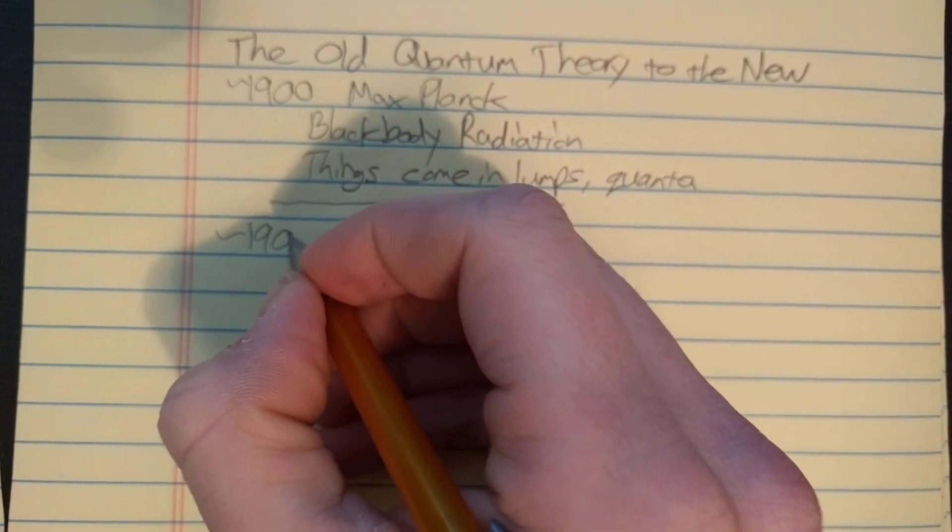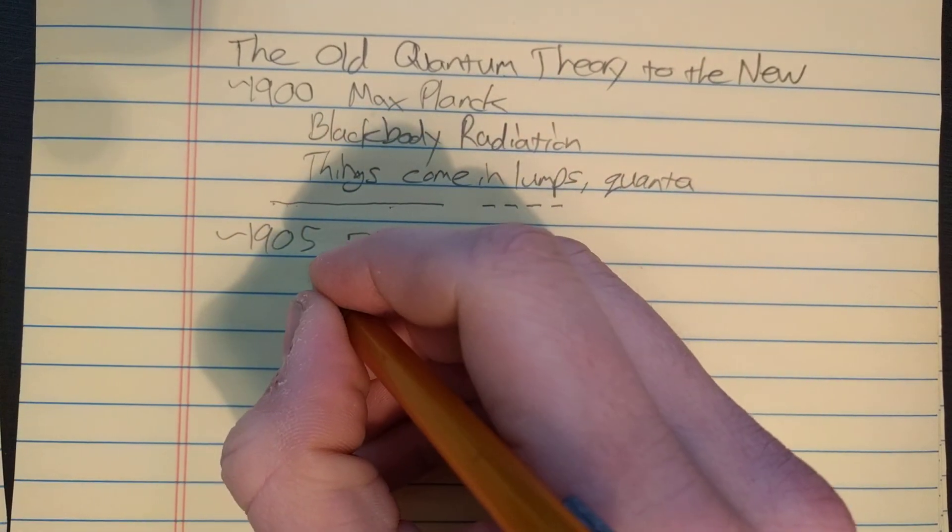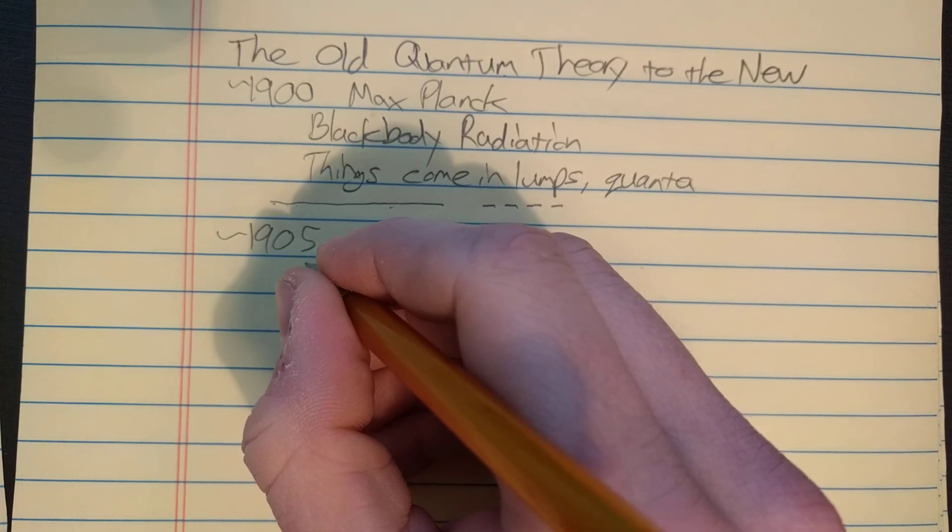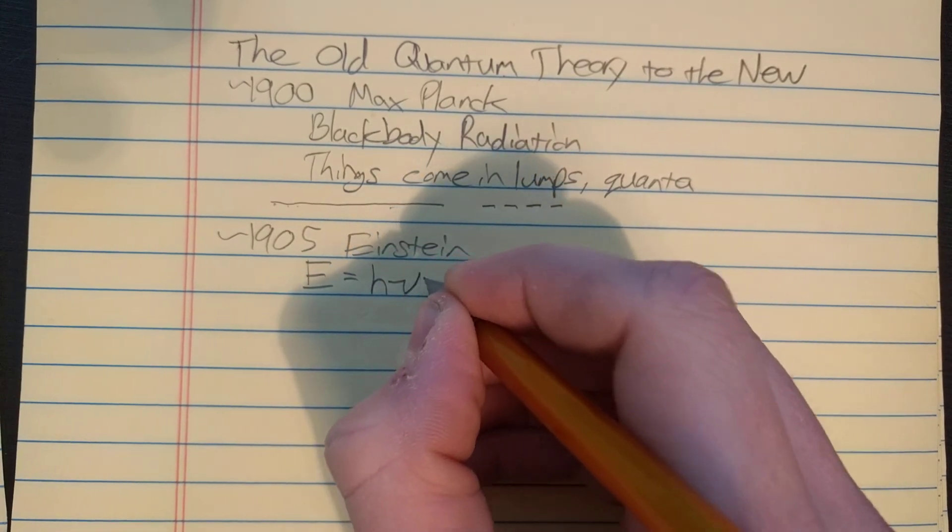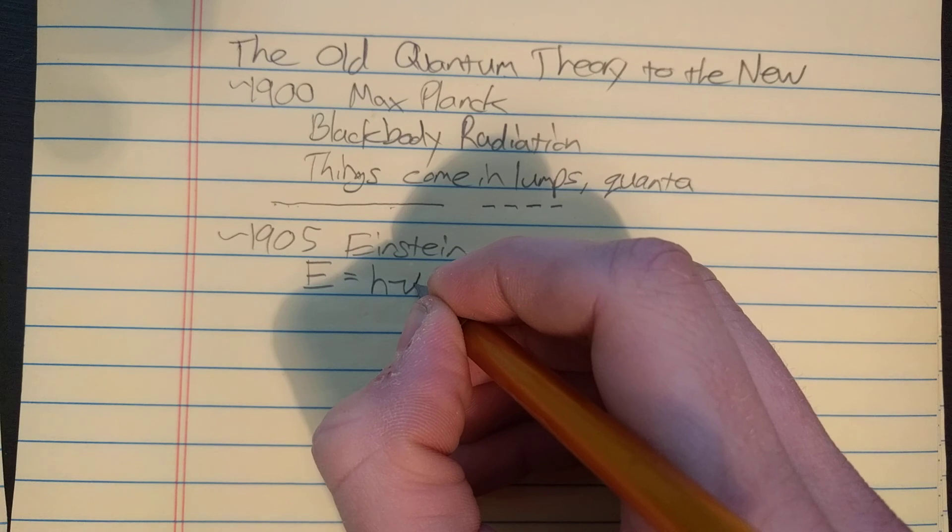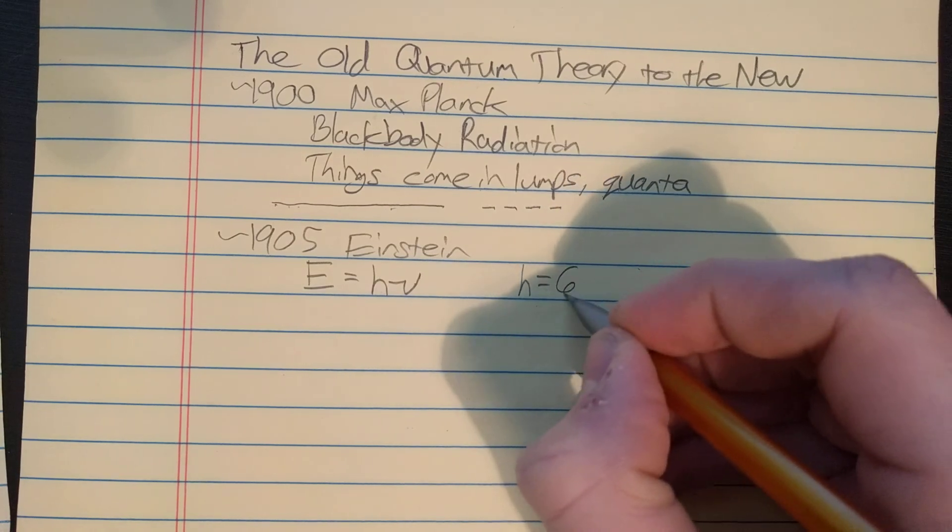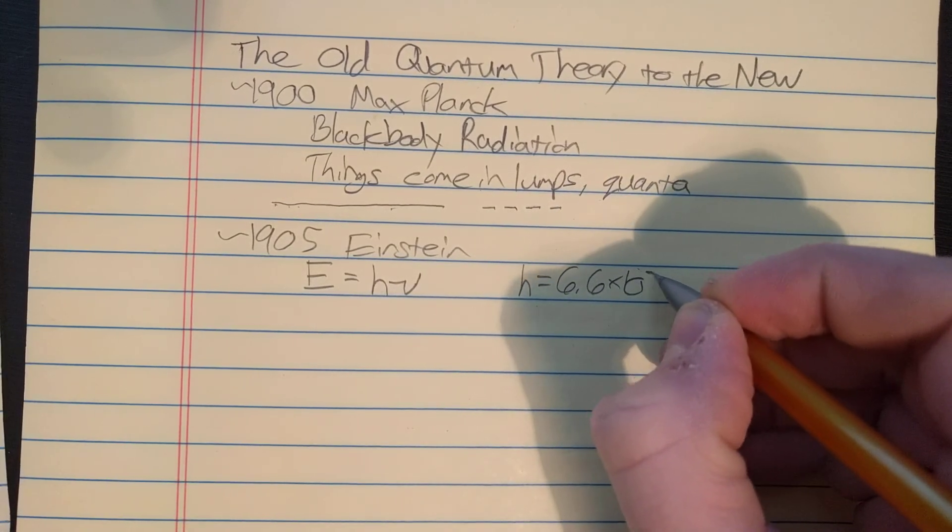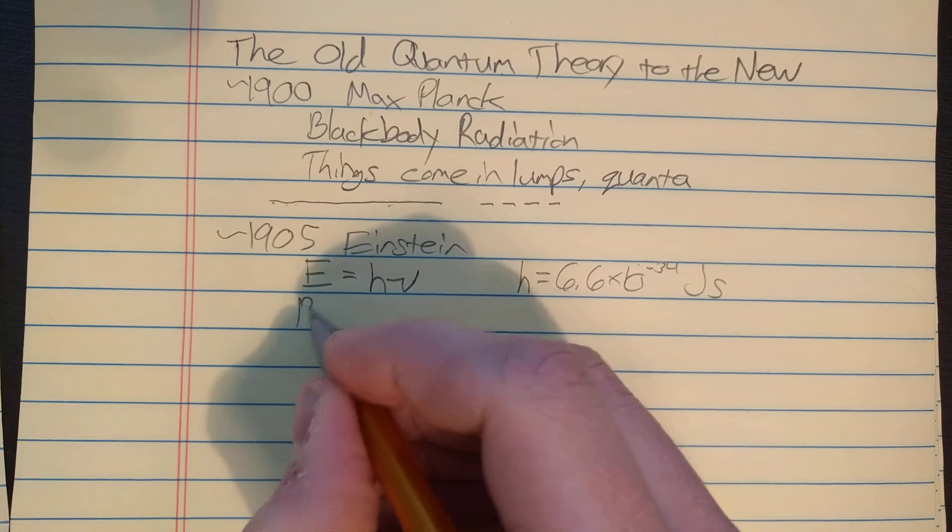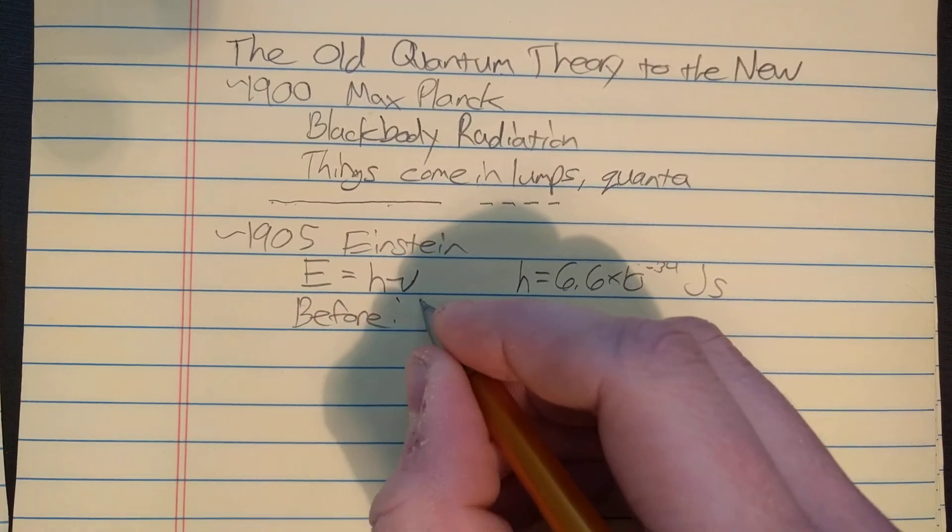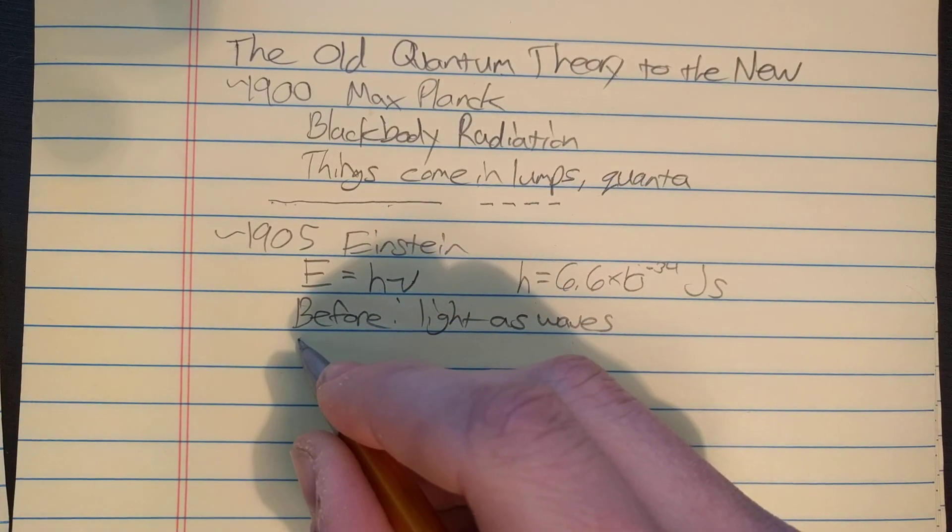Now around 1905, Einstein came along and borrowed Planck's idea that things come in lumps to say that light comes in lumps. He said the energy of a photon is equal to Planck's constant times the frequency of the light nu. I should mention Planck had this constant h and it was about 6.6 times 10 to the negative 34 joules times seconds. Before Einstein, light was thought of as mostly waves.